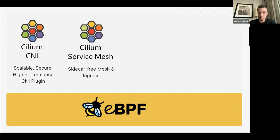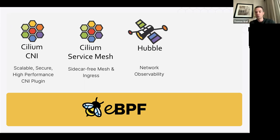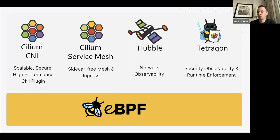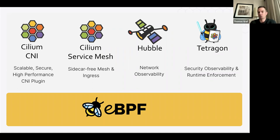We have Cilium Service Mesh, which elevates Cilium to operate at Layer 7 and implements a sidecar-free service mesh, as well as a fully conformant ingress controller and Gateway API implementation. Many of you have heard about Hubble, the network observability layer of Cilium — it provides extensive observability with Grafana dashboards, Prometheus metrics, and so on. And lastly, Tetragon, the security observability and runtime enforcement layer that operates with Cilium, but can also run completely independent of Cilium CNI. What connects all these projects is eBPF — they're all eBPF-based and leverage it to the greatest extent.